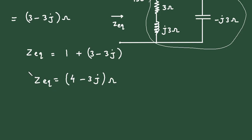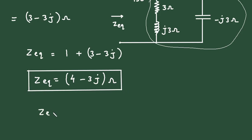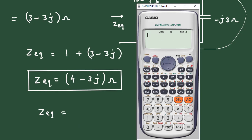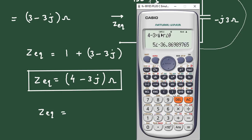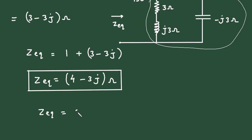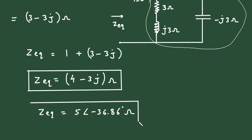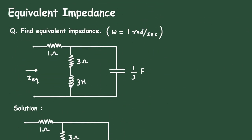This is the answer for equivalent impedance in rectangular form. In polar form, 4 minus 3j equals 5 at an angle of minus 36.86 degrees, in ohm. So this is the value of equivalent impedance, and this is how we can find it. Don't forget to check out the other videos on this channel — thanks for watching.